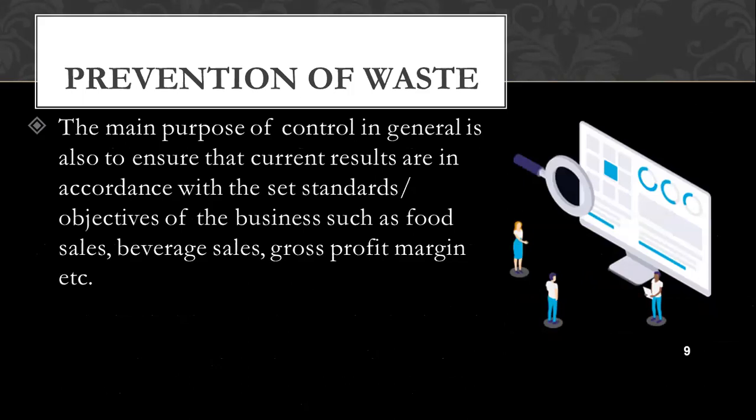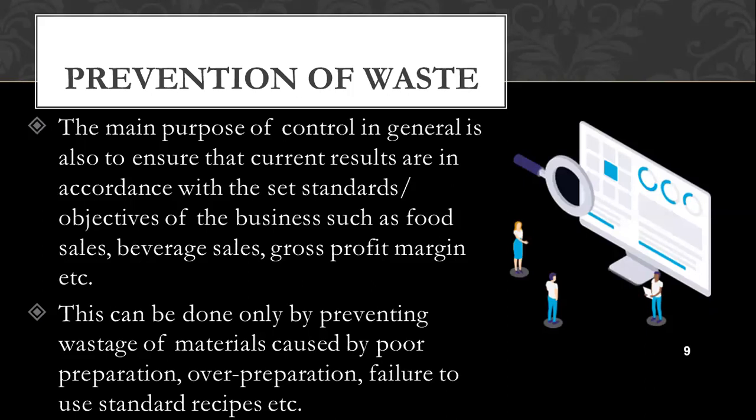Prevention of waste: the main purpose of control is to ensure that current results are in accordance with the set standards — your SOPs — and the objectives of the business such as food sales, beverage sales, or the gross profit margin you have set. This can be done only by preventing the wastage of material caused by reasons like poor preparation, over preparation, or failure to use standard recipes. Once you have control on the recipes and the yield you are generating, prevention of waste will automatically happen.